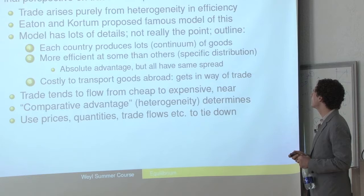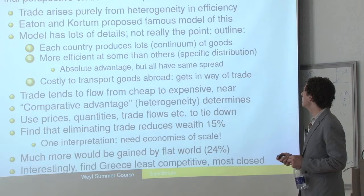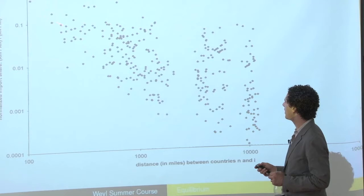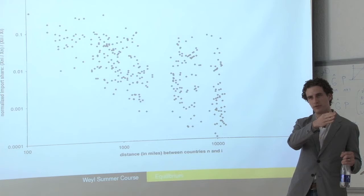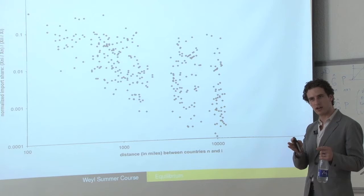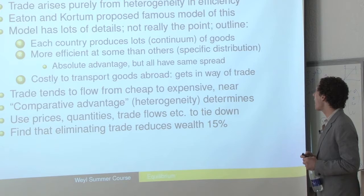Goods will tend to flow from markets where they're relatively cheap to markets where they're relatively expensive — from countries with higher absolute advantage to others. But goods flow in both directions because of comparative advantage. To show the costs of transporting goods, Eaton and Kortum graphed the normalized share of imports a country has against the distance between countries. The further a country is away, the less likely you are to import from them. That force goes against comparative advantage, and by using it as the cost side, they calibrate how much comparative advantage there must be to observe the trade flows we see.